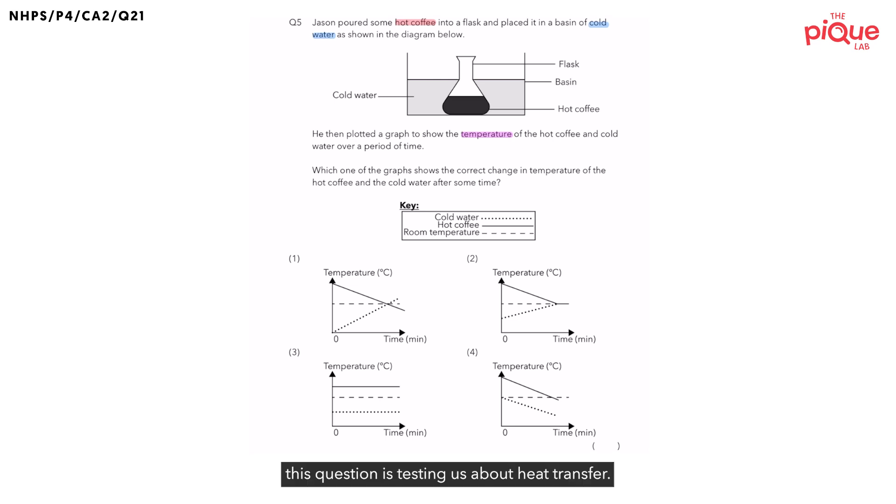Now, you notice this question is testing us about heat transfer. Specifically, the heat transfer between the hot coffee and the cold water. We've learned that heat is always transferred from a warmer region to a cooler region. Now, do you think the hot coffee would gain heat from the cold water or lose heat to the cold water? Since the hot coffee is warmer, in this case, the hot coffee should then lose heat to the cold water.